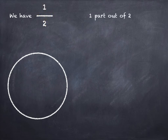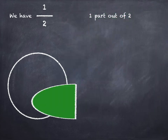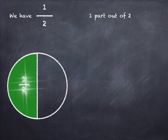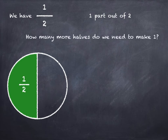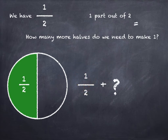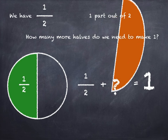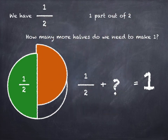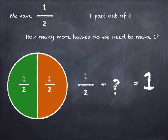We have one half — one part out of two. There it comes, one half. How many more halves do we need to make one? One half plus what equals one? Let's see. One more half. So one half plus one half equals one.